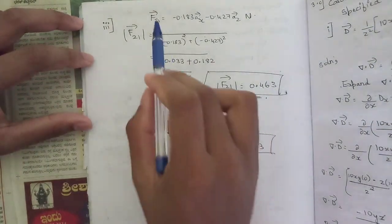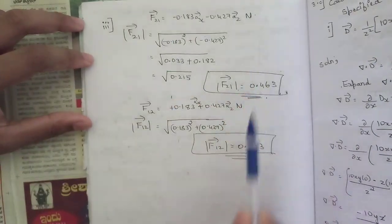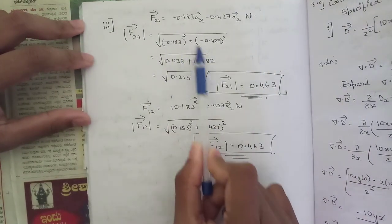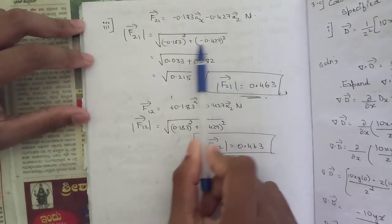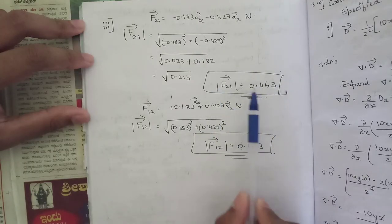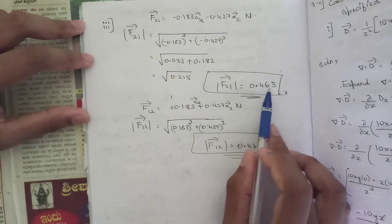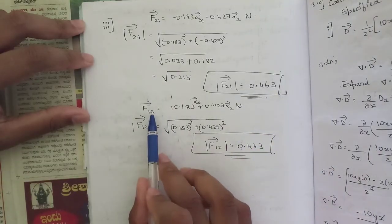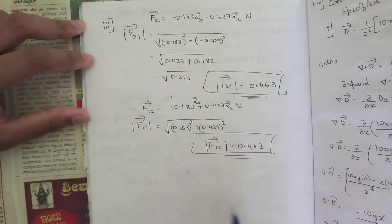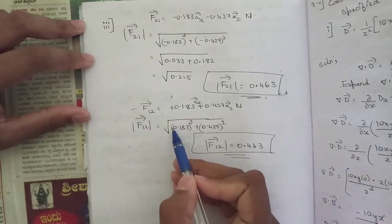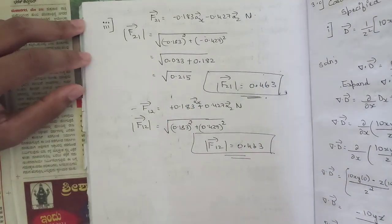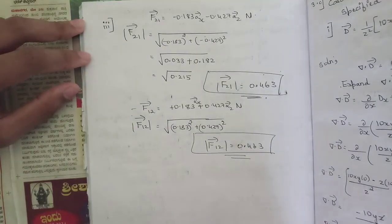For the magnitude of F21: |F21| = √((minus 0.183)² + (minus 0.427)²) = 0.463 Newtons. The magnitude of F12 is the same — 0.463 Newtons — because squaring removes the negative sign. So both magnitudes are equal at 0.463 Newtons, confirming Newton's third law.